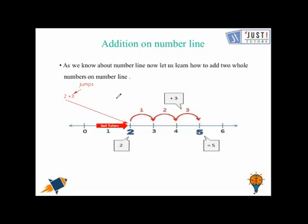After 2, on the first jump, we stand on 3. On the second jump, we move to the 4. And after the third jump, we get the number 5, which is the answer. So this is how we add on the number lines.